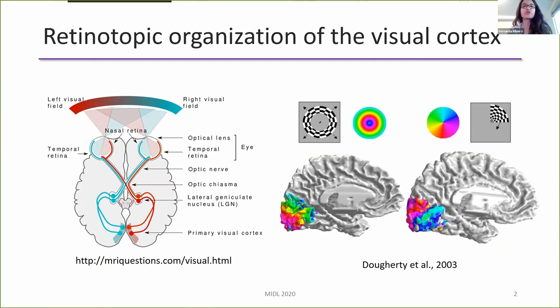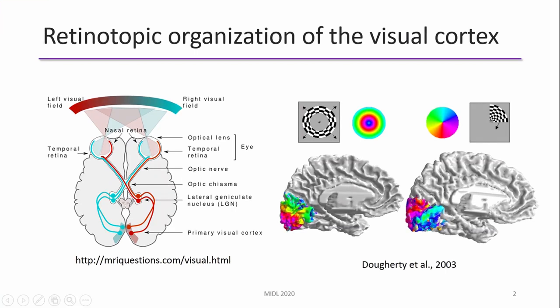Many studies have shown that this retinotopic organization is similar across people, although considerable variability still exists. This variability has been at least partially linked to variability in anatomical features. So we aim to build a deep learning model capable of learning this complex relationship between the functional organization of the visual cortex and its underlying anatomical features.